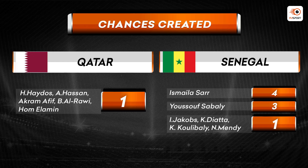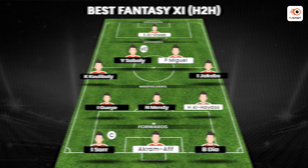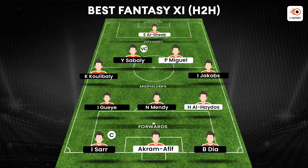Ismaila Sarr ke bhi three tackles aur interceptions the. Chances created ki baat karay — Al-Haydos, Abdul Karim Hassan, Akram Afif aur Al-Rawi Al-Ameen sab ke ek ek chances created the for Qatar. For Senegal, Sabaly yaha pe bhi inka naam hai — three chances created. Jacobs, Diatta, Koulibaly aur Mendy ke bhi one chance created each.